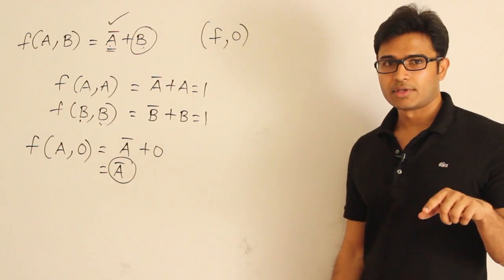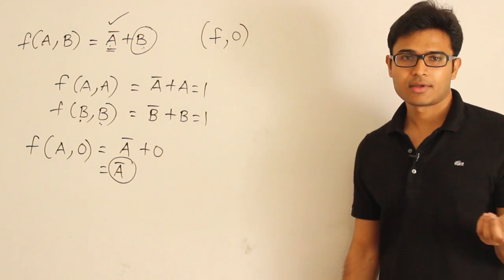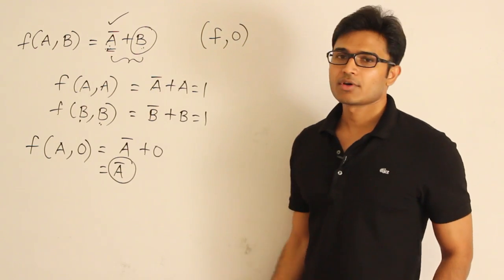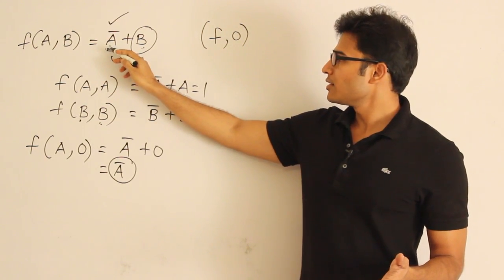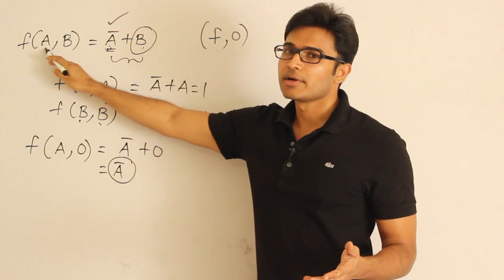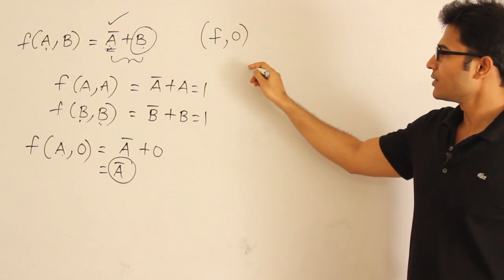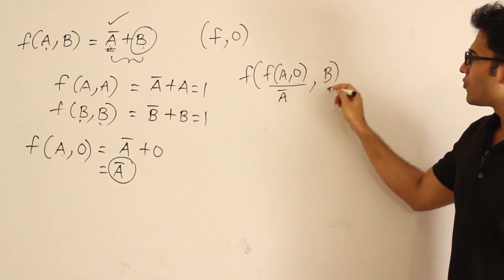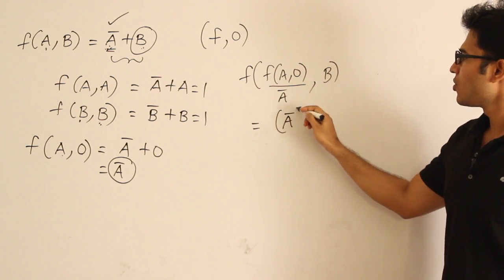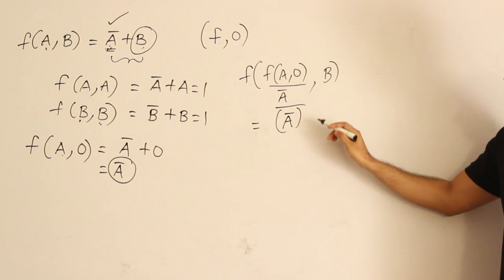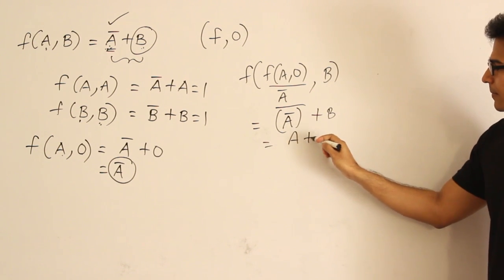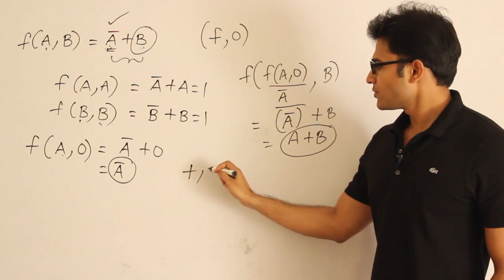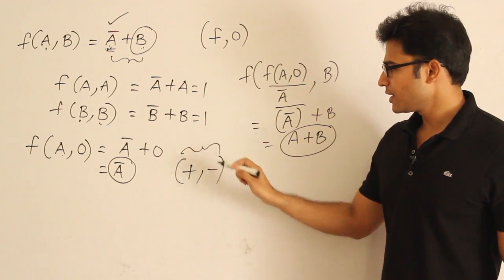Now using f with support from 0, let's see whether we can get OR. To get a + b, we complement a' + b. Since a' = f(a, 0), we write f(f(a, 0), b), which represents a'' + b = a + b. Yes, we are able to get OR. So we have both complementation and OR, meaning the function can express all Boolean operations.